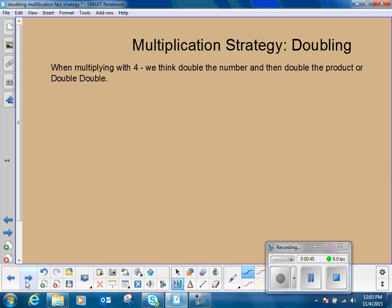We continue this multiplication strategy when we get to the multiplication facts of four. When multiplying with four, we think double the number and then double the product, or another way to think about it is double-double.